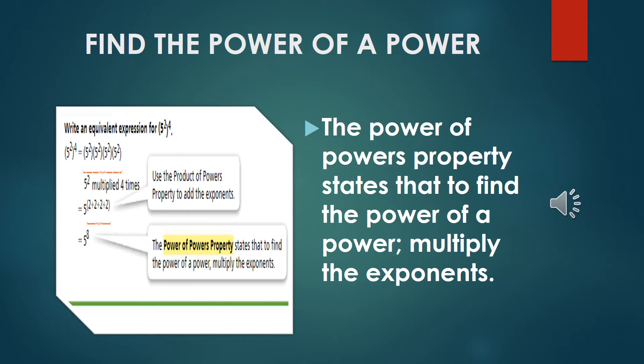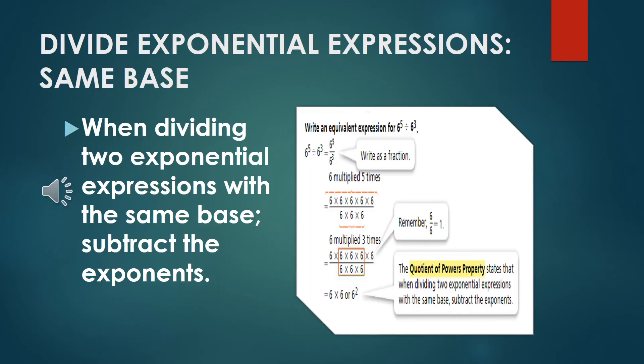If we need to find the power of a power, we only need to multiply the exponents. In this case, we have 5 to the power of 2, to the power of 4. If we multiply 2 times 4, this equals 8, so the answer is going to be 5 to the power of 8.